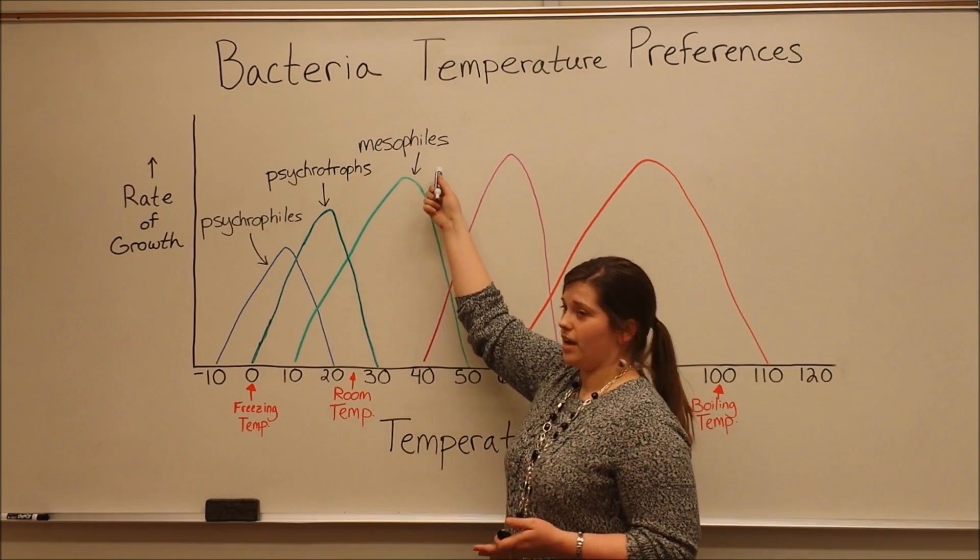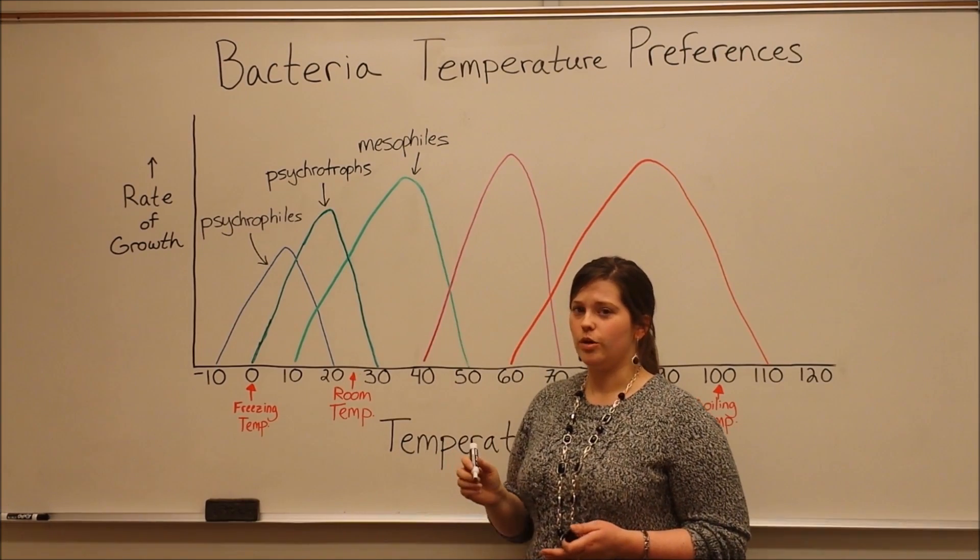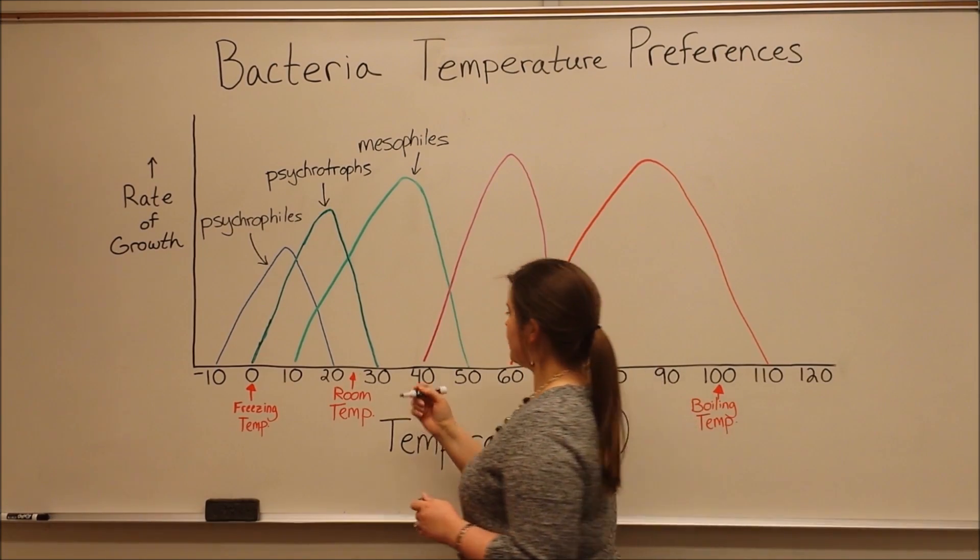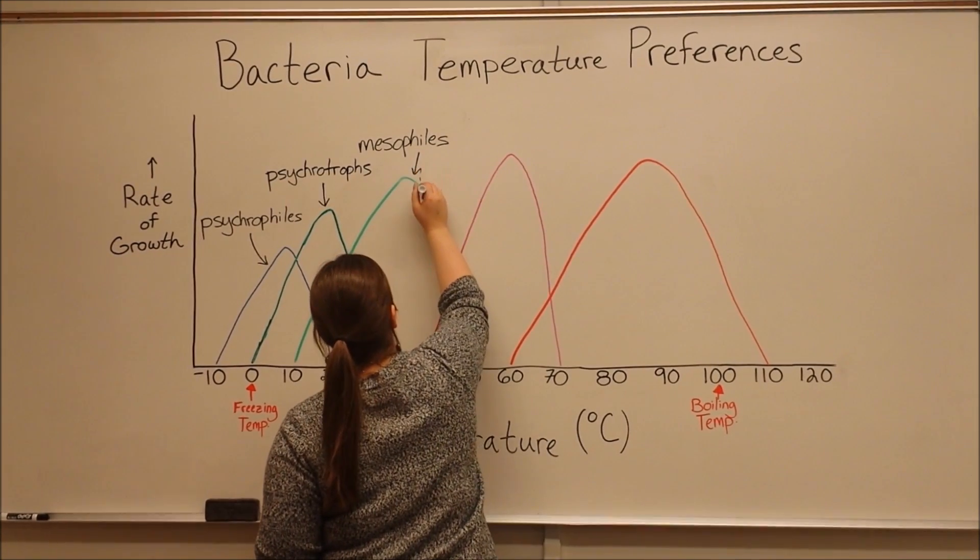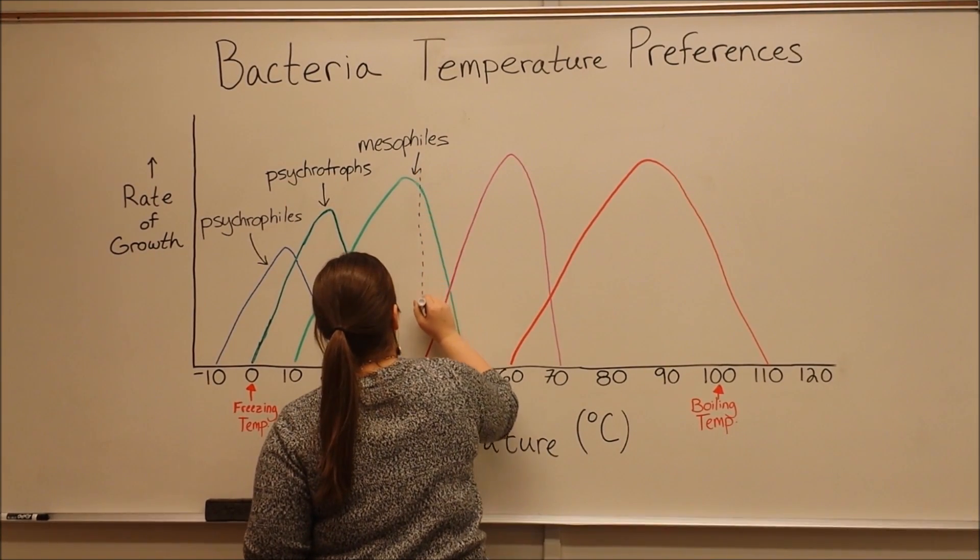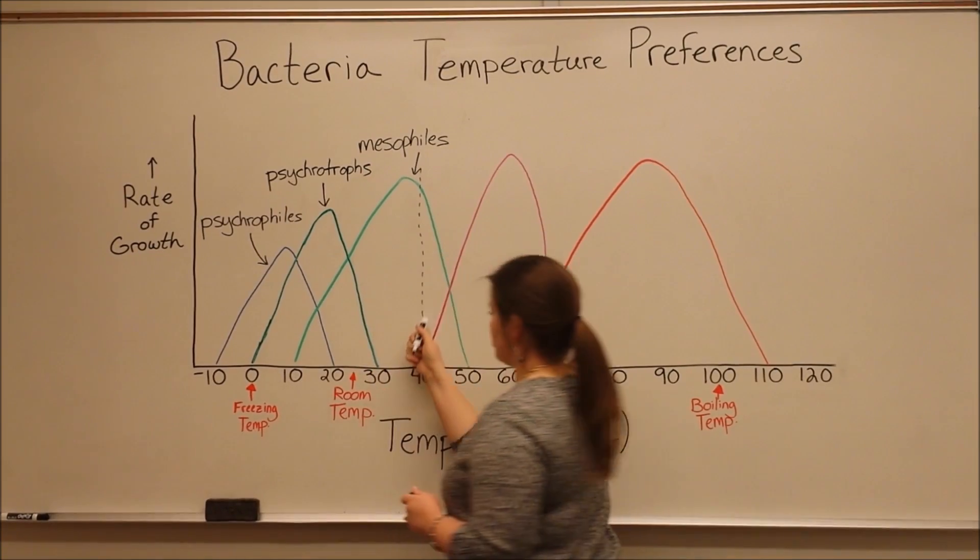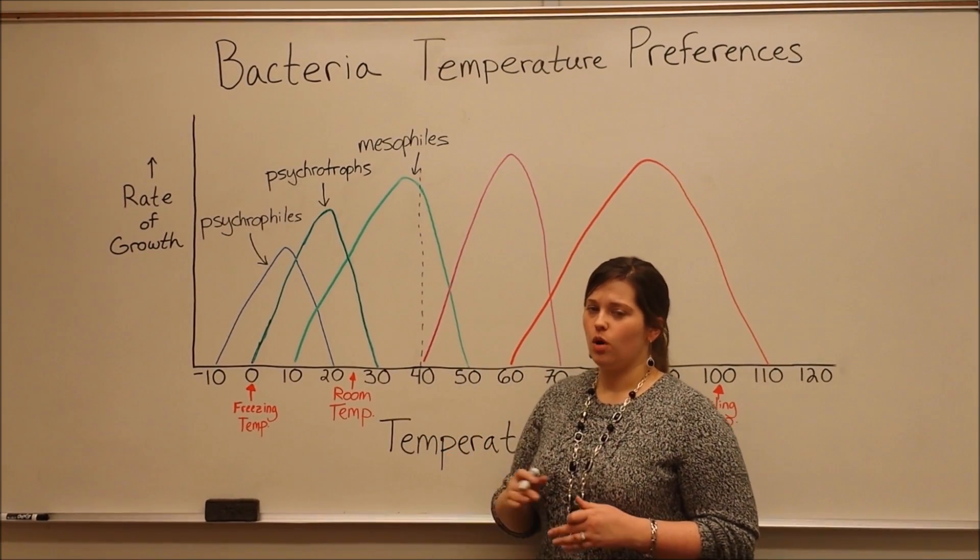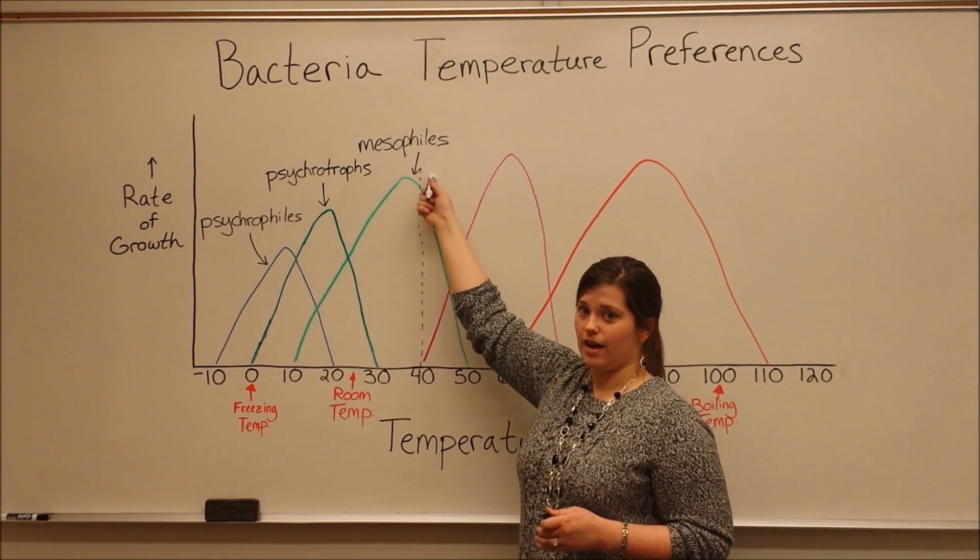Also, human body temperature is about 37 degrees Celsius, which is about where this dashed line is. So all human pathogens are also mesophiles.